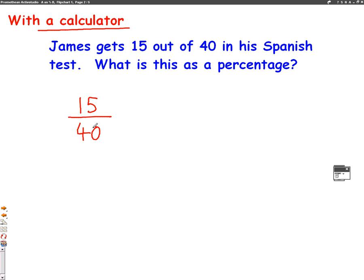Now, the way we change a fraction into a percentage is by timesing it by 100. So on a calculator, we can do this straight away. We can do 15 divided by 40 because that's what this fraction means here. And then we're going to multiply the answer by 100 and press equals. And when we do that, we get 37.5%.